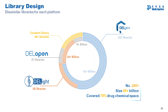WuXi libraries cover about 70% of drug-like chemical space. At the moment, we have over 280 libraries covering over 65 billion compounds, spread over four different products. Our largest library collection is in the DEL Pro package with 174 libraries, then DEL Lite with 58 libraries, covalent libraries as a special offer with 50-plus libraries, and DEL Open for academia with 27 libraries.